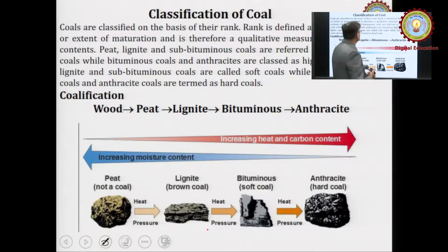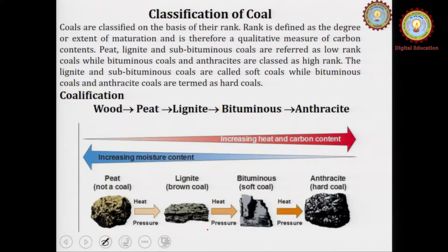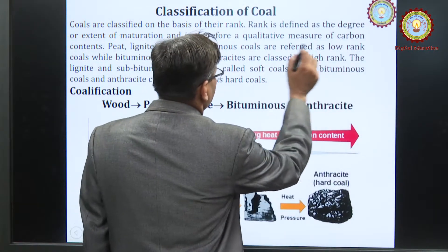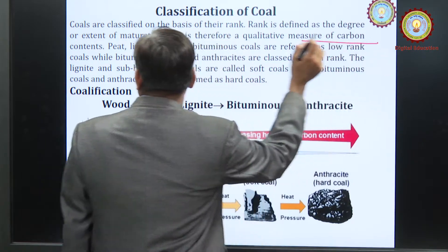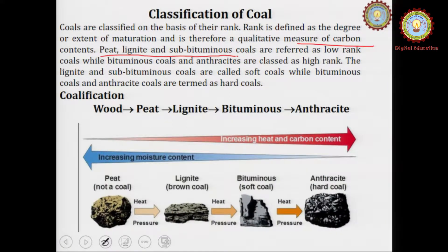Classification of coal: coals are classified on the basis of their rank, and rank is defined as the degree or extent of maturation. It is therefore a qualitative measure of carbon. Peat, lignite, and sub-bituminous coals are referred to as low rank coals, while bituminous and anthracite coals are regarded as high rank coals.